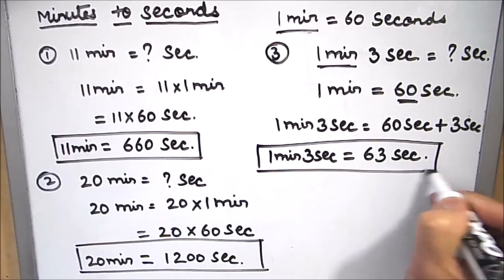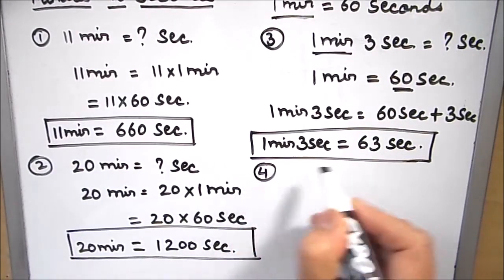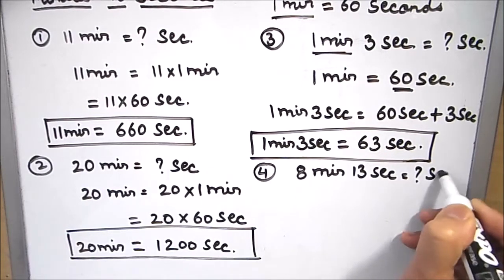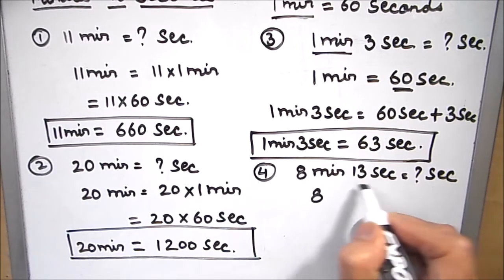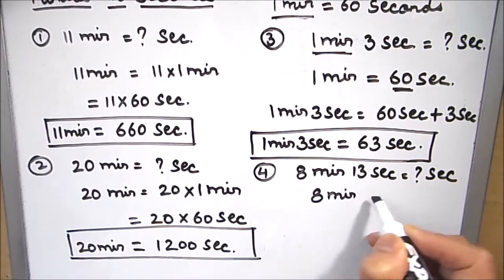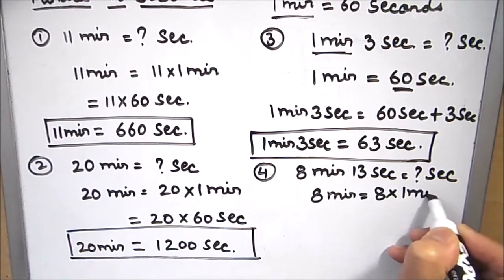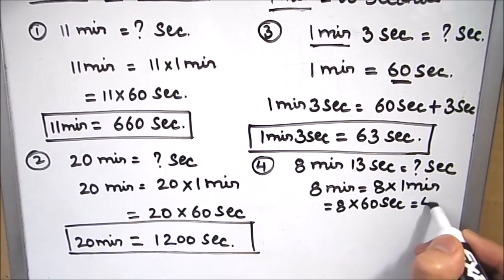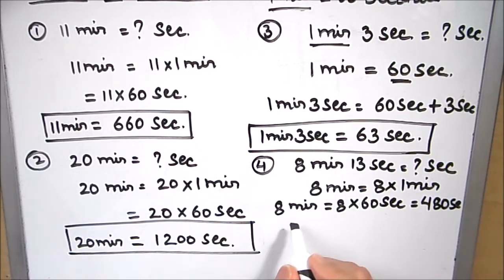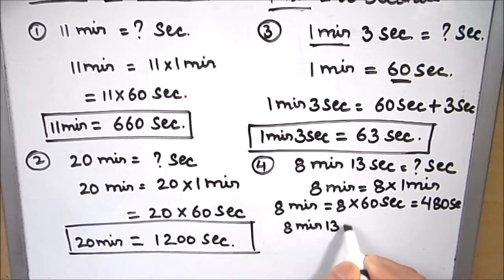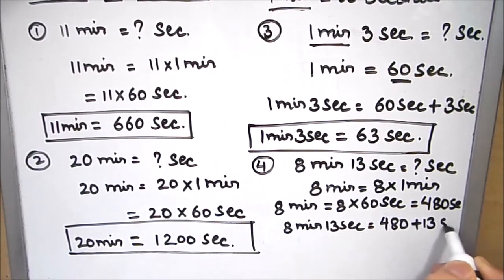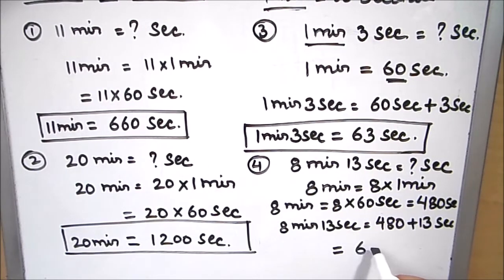Let's take one more example where we need to convert 8 minutes 13 seconds into seconds. As we need seconds, we are not going to touch the seconds part here. We are going to convert 8 minutes to seconds first. So 8 minutes can be written as 8 times 1 minute, and in place of 1 minute we can write 60 seconds, so this comes out to be 480 seconds. Now we have 8 minutes 13 seconds, so we are going to add 13 seconds to 480 seconds, which comes out to be 610 seconds.